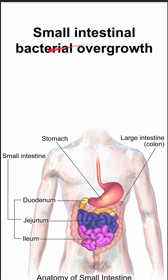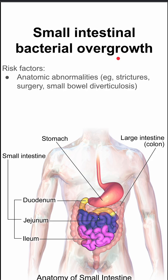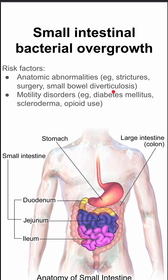Here are some notes on small intestinal bacterial overgrowth, also abbreviated to SIBO, S-I-B-O. Risk factors for SIBO include anatomic abnormalities like strictures, surgery, and small bowel diverticulosis, motility disorders like diabetes, scleroderma, and opioid use.